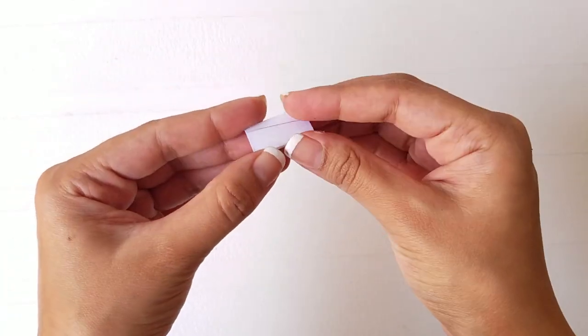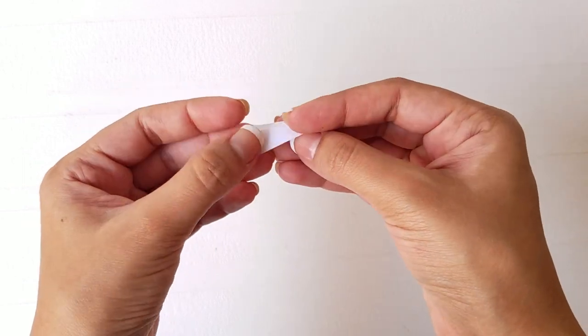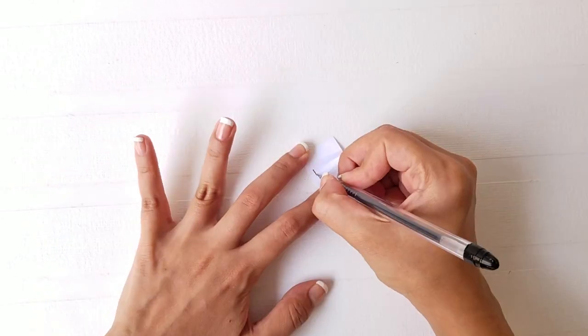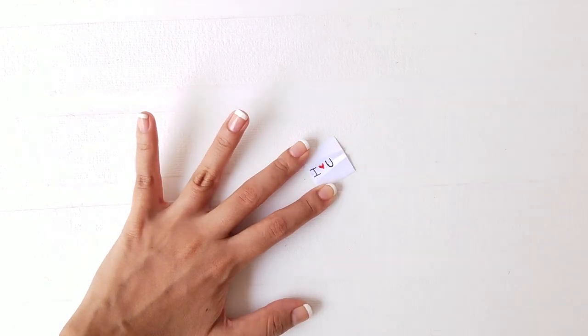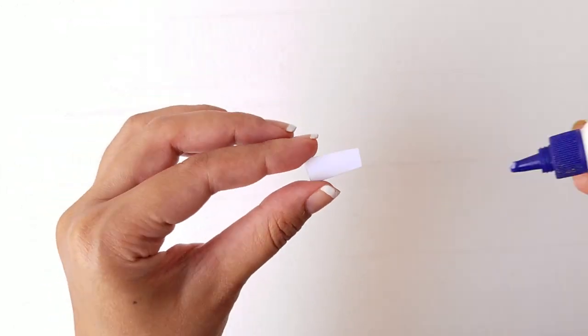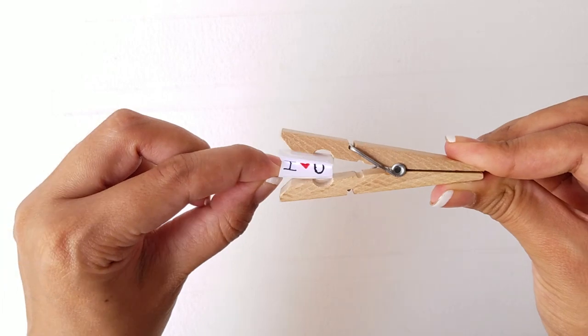Fold the paper in half and create a crease on the traced line. Write a message between the two folds. Apply glue on the flaps and stick the message inside the clip.